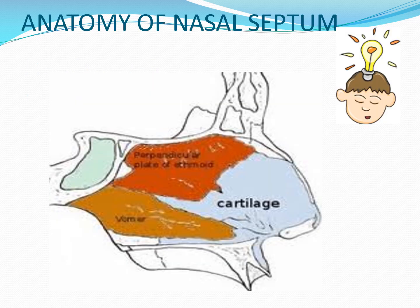Recall the anatomy of nasal septum. Major contribution is made by quadrangular cartilage, vomer, and perpendicular plate of ethmoid. Minor contributions come from the nasal process of frontal bone, small contribution from nasal bones, nasal spines of maxilla, and rostrum of sphenoid.